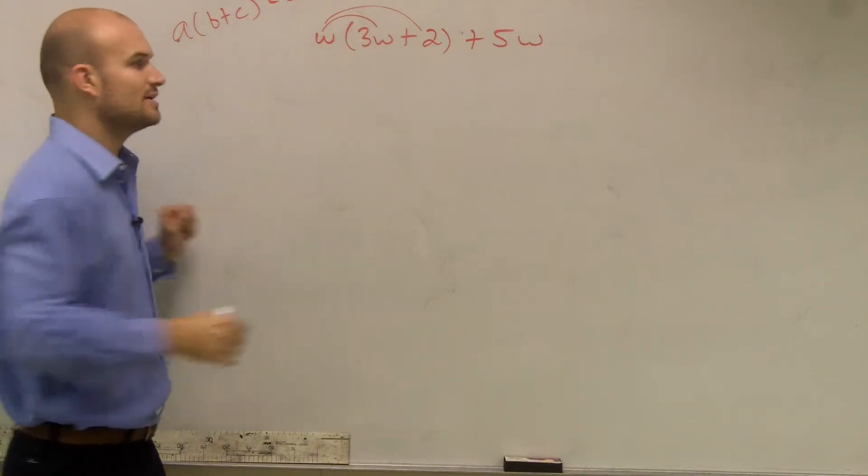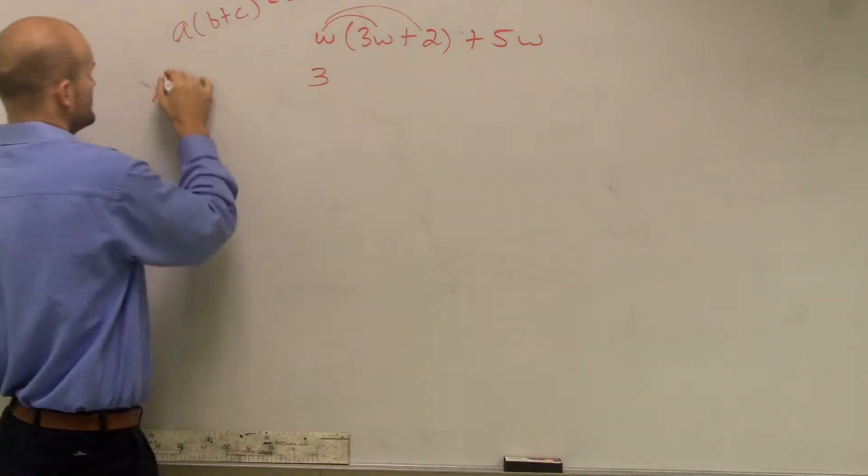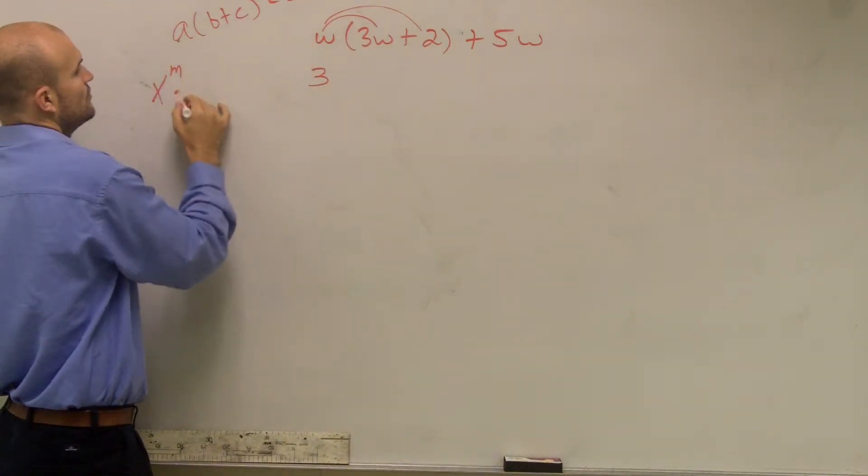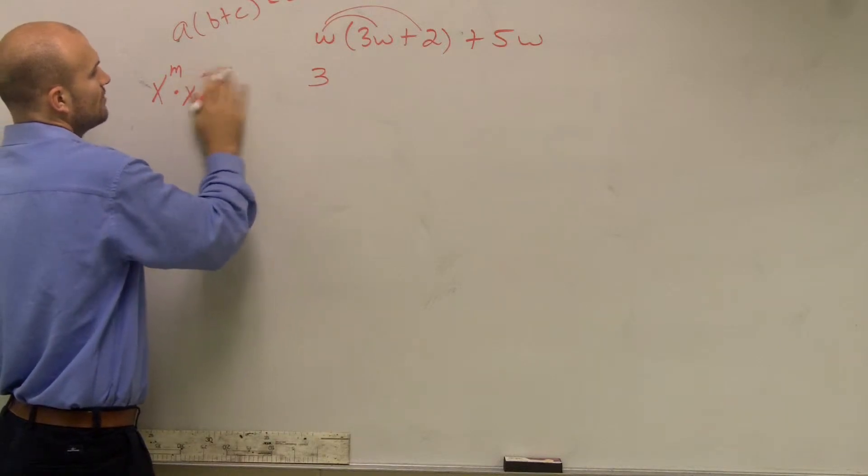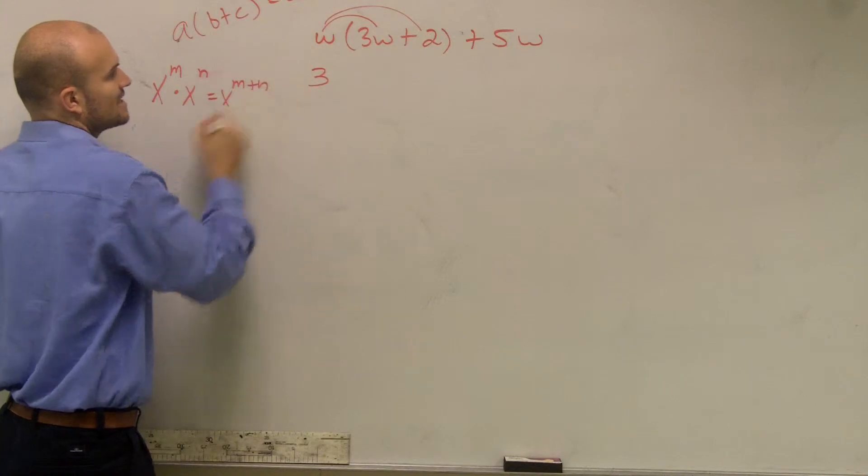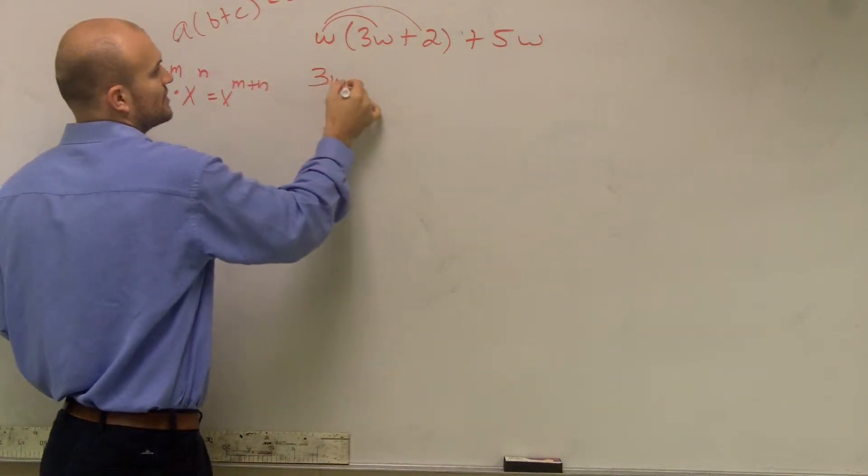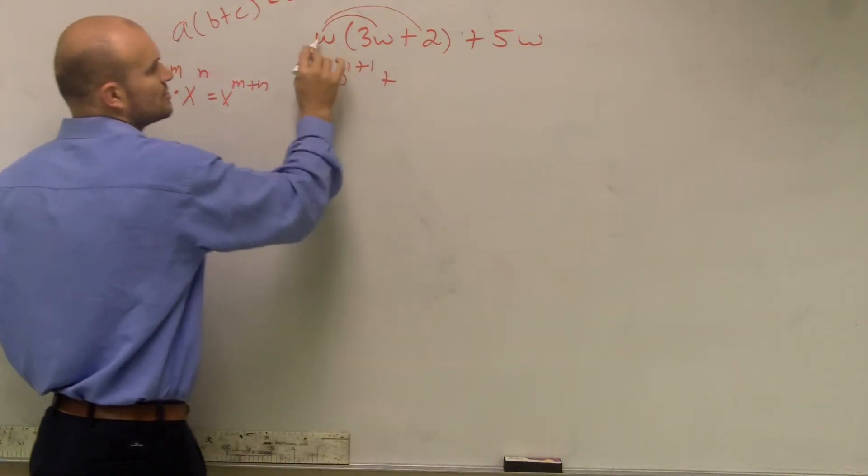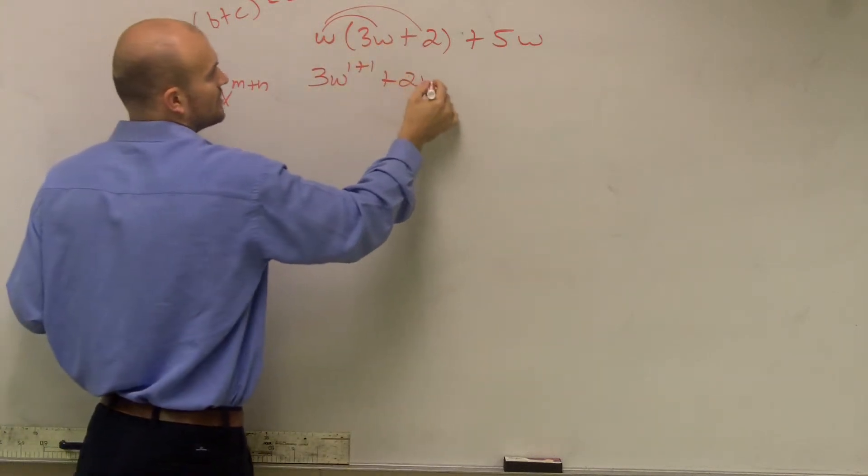So w times 3w, remember our rules of exponents state, whenever you have two monomials multiplied with exponents, you add the exponents. So this becomes 3w to the 1 plus 1, plus w times 2 is 2w.